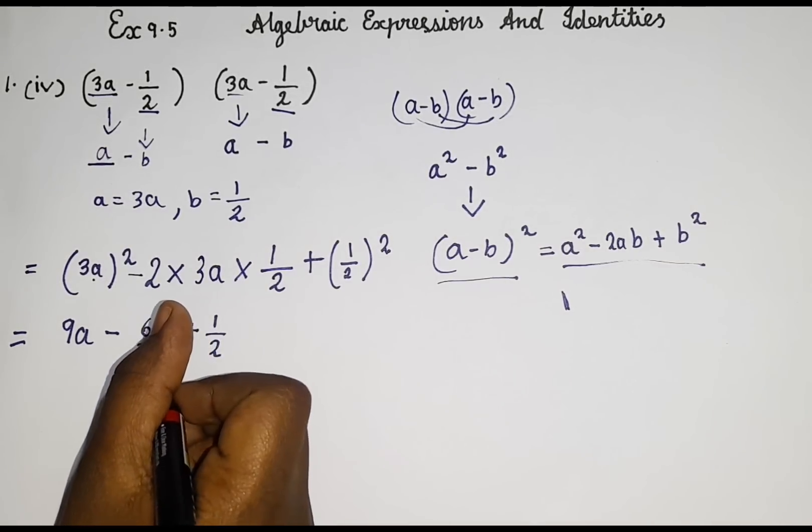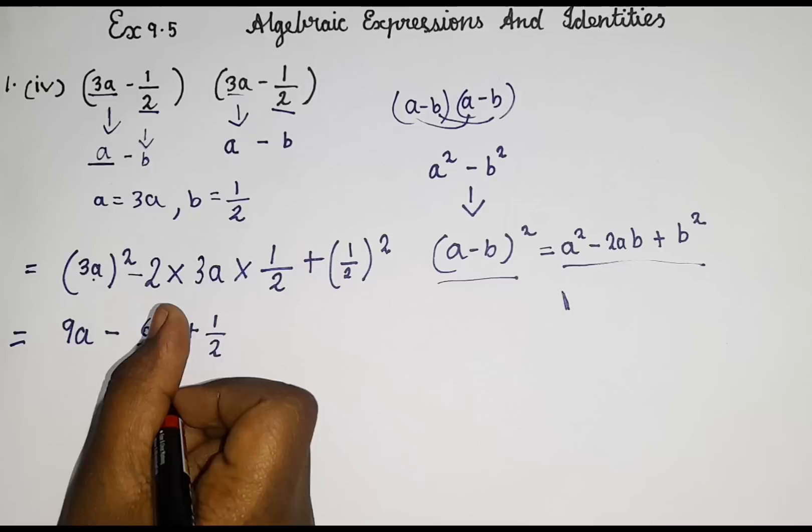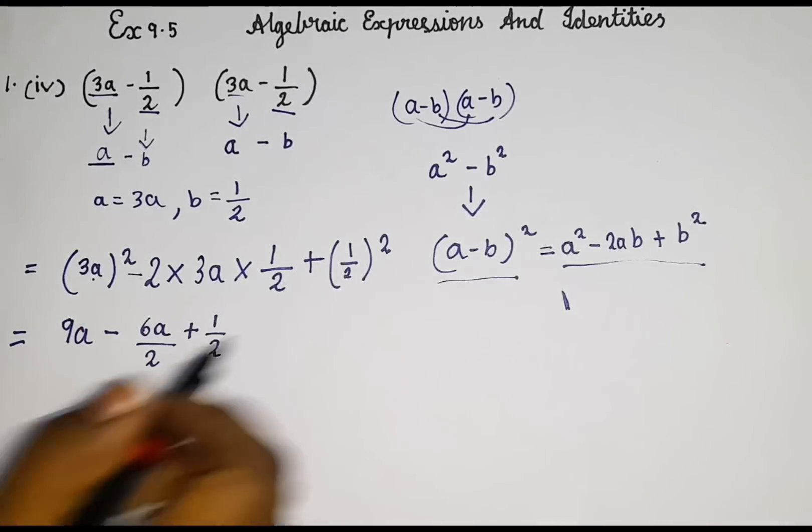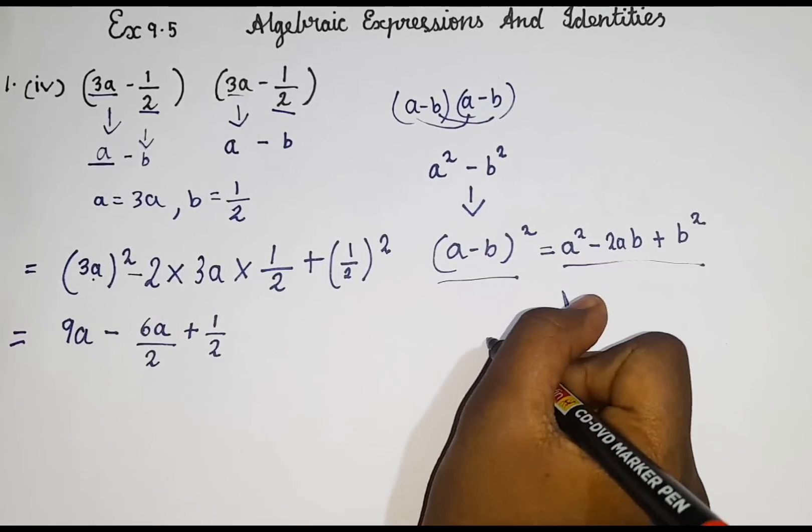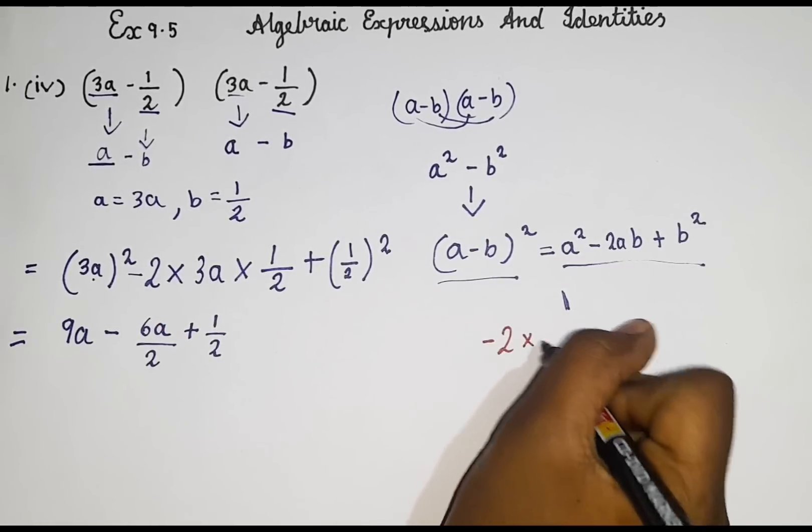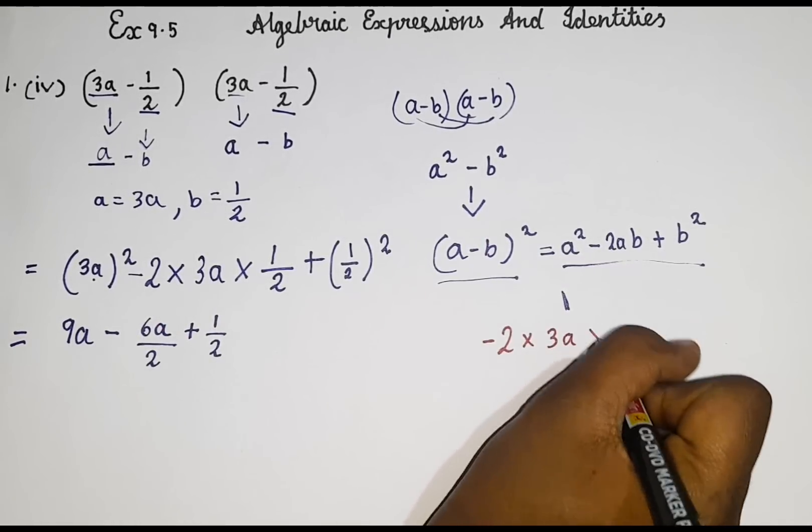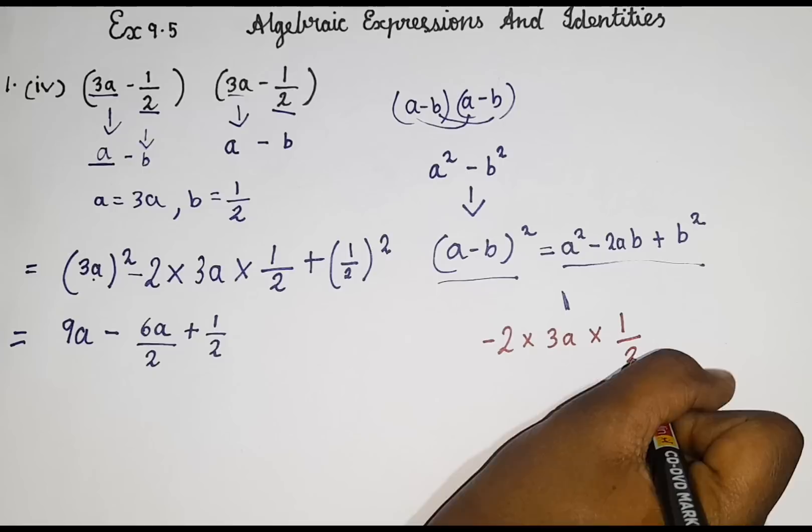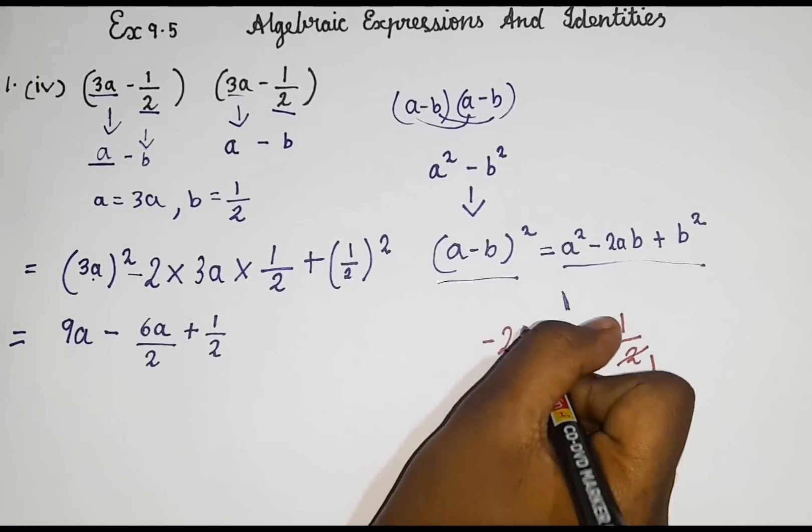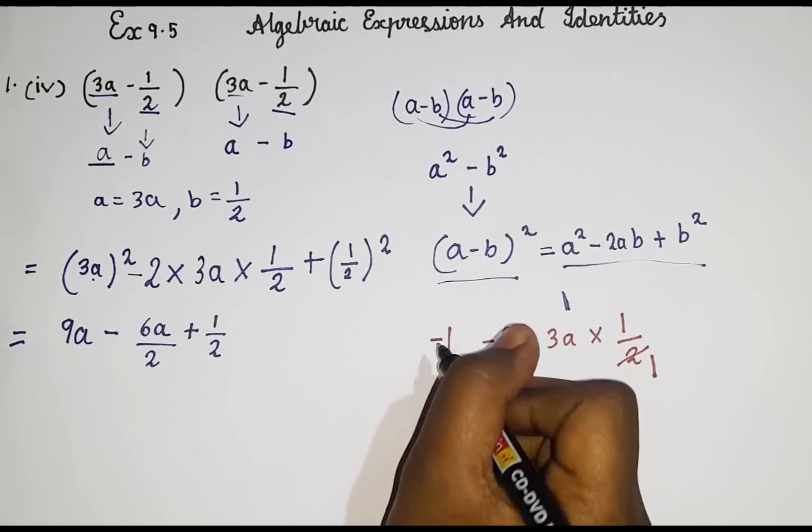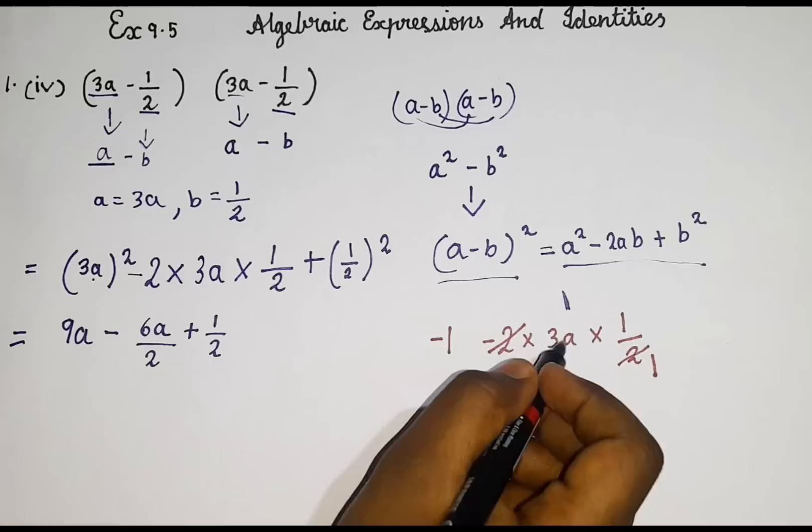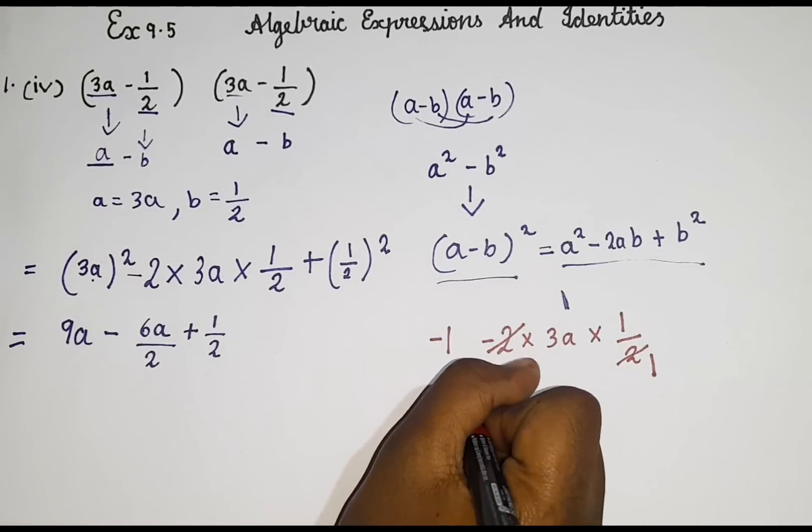Or before this we can cancel it in another way too. So let me show that. The first way is we have it minus 2 into 3a into 1 by 2. So 2 1s are 2. 2 1s are 2. And the minus sign.